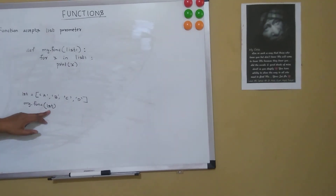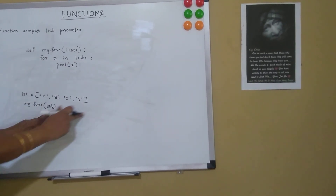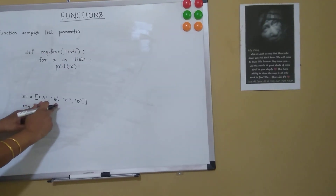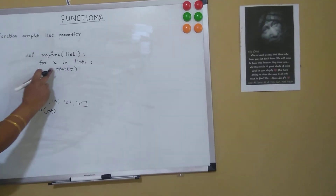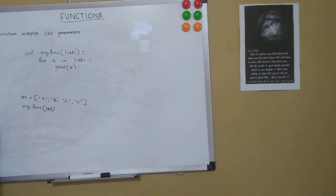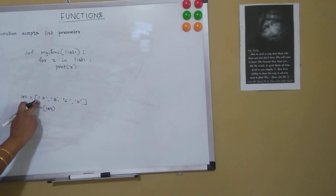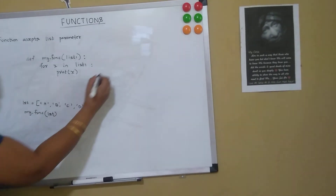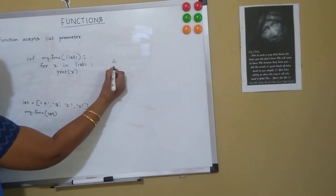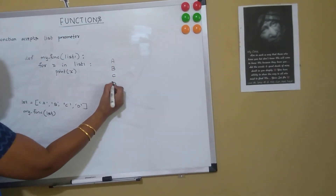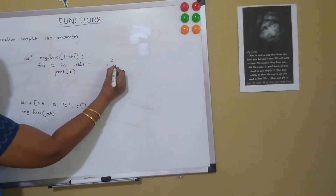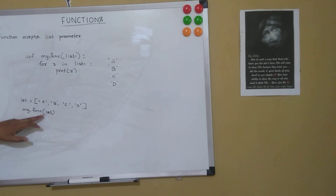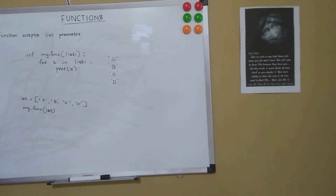Here I am passing a list as the parameter and the function is accepting the list. So list1 will now have A, B, C, and D. Using the for loop for iteration, it will iterate through each and every item and print the item. So on the console, A, B, C, and D get printed. This is a function which accepts a list as a parameter.